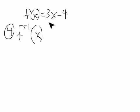f of x is defined as 3x minus 4, and we're supposed to find the inverse of it. So remember, the inverse is the thing that undoes it.